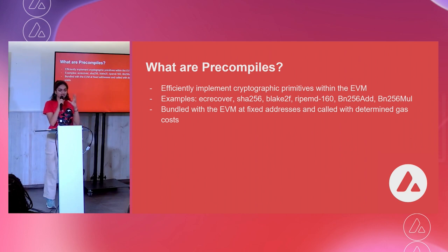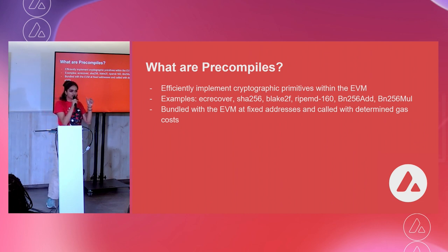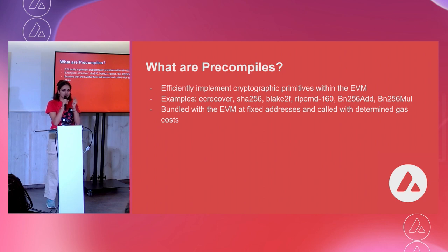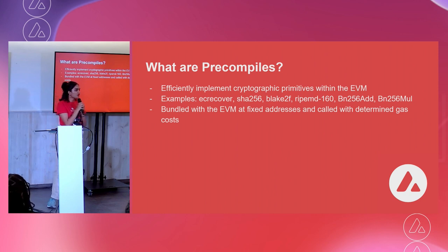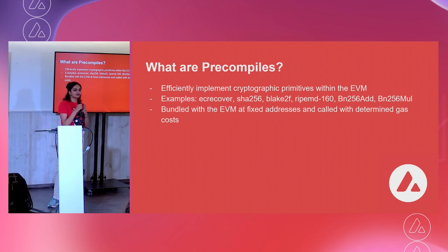But precompiles work a slightly different way. When a precompile function is called, we actually redirect it in the EVM to the function that was implemented — in this case, Golang — and we just execute the function right then and there. Why is this better? Precompiles are super cost efficient and faster. Some of the functions are faster.